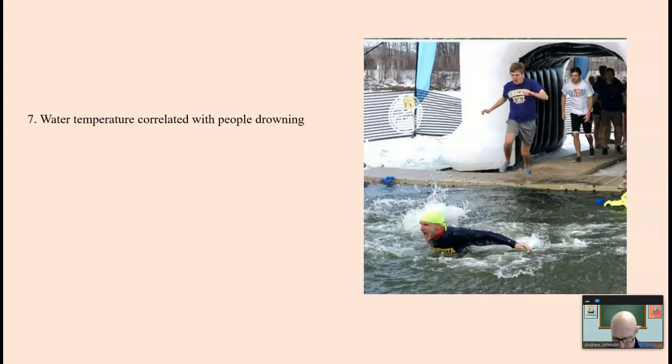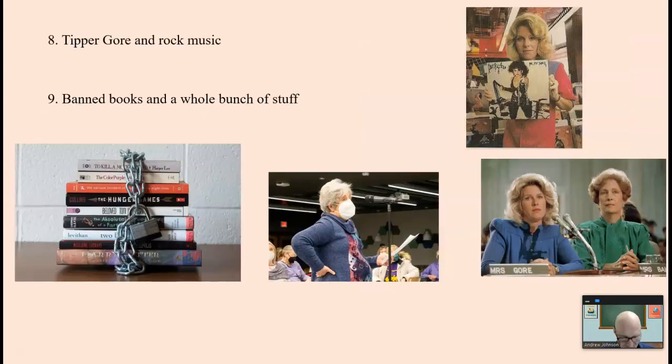Another example of a misuse of correlational research: water temperature is related to drowning. There is a very strong correlation there. When the water temperature goes up, the number of people drowned goes up. We cannot say that water temperature causes drowning because when it's cold, fewer people are in the water. And when it's really cold, there's ice. That's a misuse, and that's often done, by the way. You know, rock music causes this or that because there's more rock music, there's more this and that. That's correlation. We cannot say that rock music causes something to happen. The same way with banned books and a whole bunch of stuff, video games. We can say there's a correlation between video games and violence, but we cannot say that one causes the other. Correlation does not infer causation.